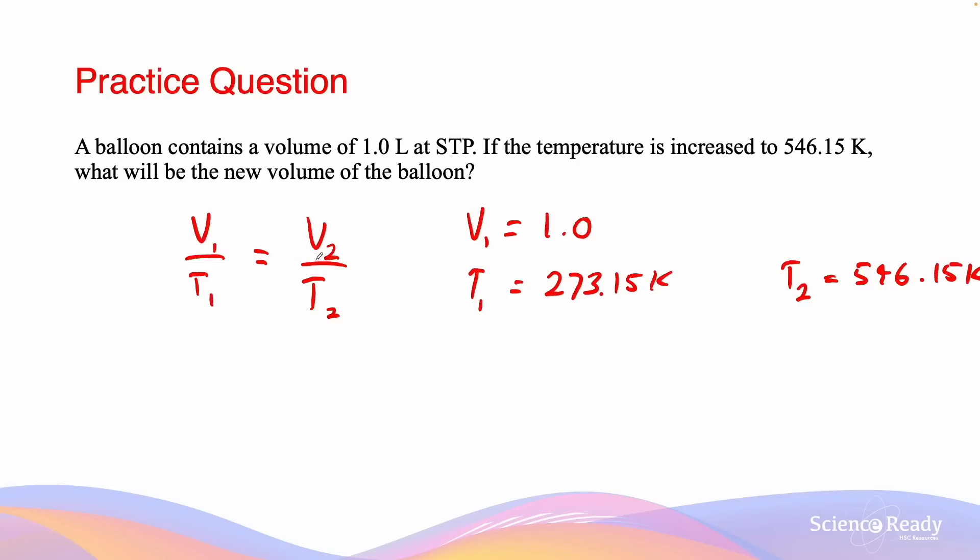So we can substitute these values in order for us to get V2, where V2 is equal to V1 multiplied by T2 divided by T1. This will give us an answer of 2.0 liters, which is given as well in two significant figures, since that is the smallest amount of significant figures given to us in the question.